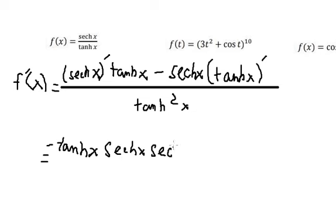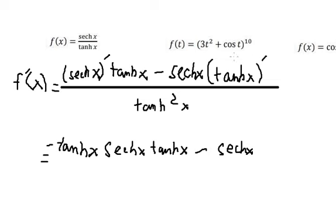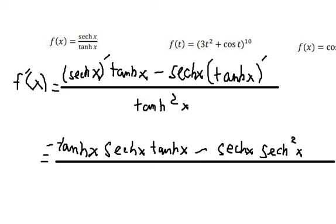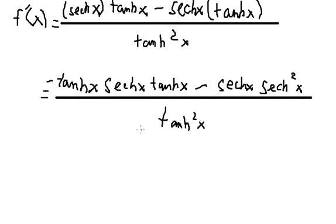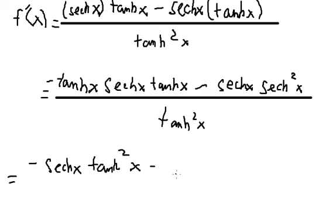We have tan x. This gives us secant x squared over tan x squared. So we get negative secant x multiplied with tan x squared, minus secant x to the power of three.